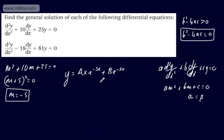In general, we write this as y = e^(-5x)(ax + b).